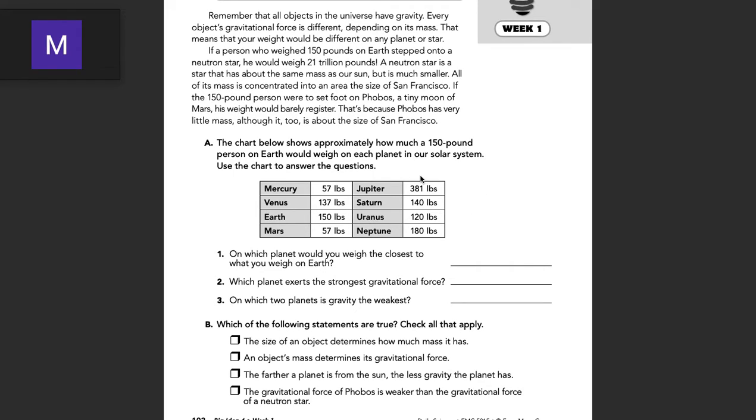If we look at Part A, it says the chart below shows approximately how much a 150-pound person on Earth would weigh on each planet in our solar system. Use the chart to answer the questions. As you see, it varies from planet to planet. We have all the way up to 381 pounds down to 57 pounds.